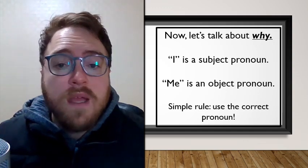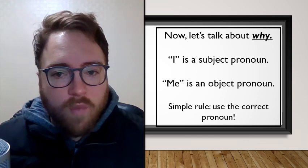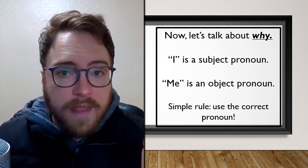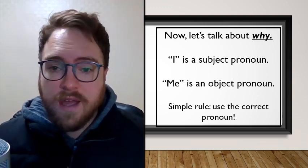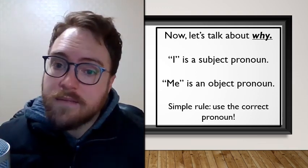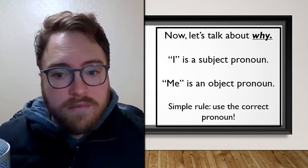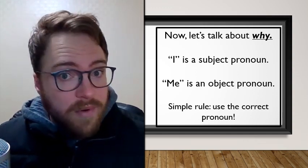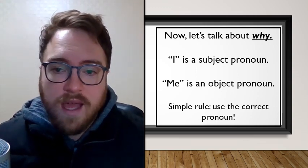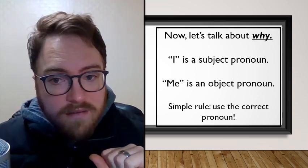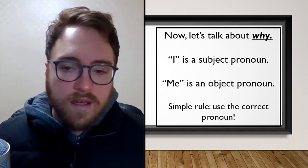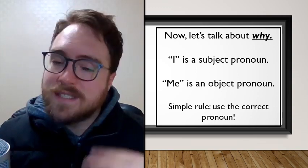Now let's talk about why these two words are confused and what we should do. The answer is very simple: 'I' is a subject pronoun and 'me' is an object pronoun. So the rule is simple — if we're talking about the subject, we use 'I'. If we're talking about the object, we use 'me'.